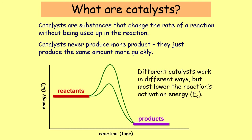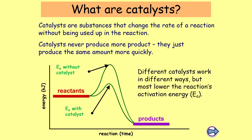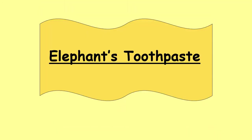Catalysts affect activation energy — you can see in the diagram that the hill or bump the reaction has to go over before reaching the products is a lot lower with a catalyst. That hill represents the activation energy. A good example of a catalyst in action is elephant's toothpaste. If you're in class you may get to see a demonstration; if not, look it up on YouTube — it's a reaction where adding a catalyst causes a very fast and visually impressive result.